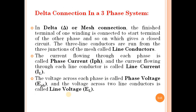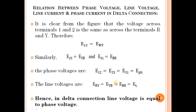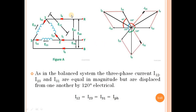Then we discussed the delta connection. In delta connection also, we defined the phase current, line current, phase voltage, and line voltage. We derived the equations and relations between phase voltage, line voltage, line current, and phase current.